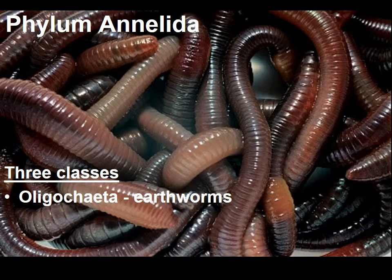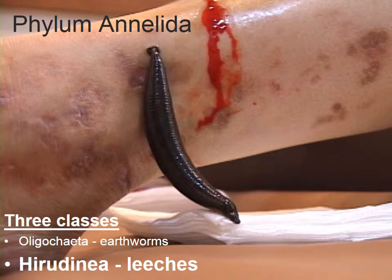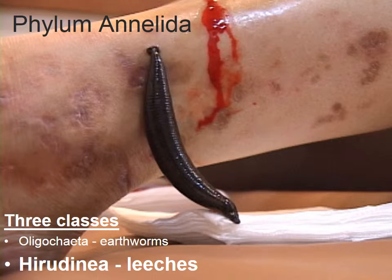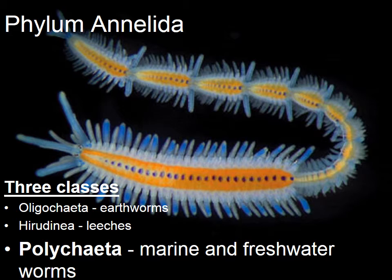There are three classes in Annelida: the Oligochaeta, or oligochaetes, which are earthworms; the Hirudinea, which are leeches — and you'll see that they also have the little compartments, the little segments going across the body, the little lines that show that there are segments; and finally, we have Polychaeta, the marine and freshwater worms. Polychaetes are almost invariably aquatic.